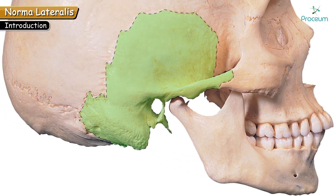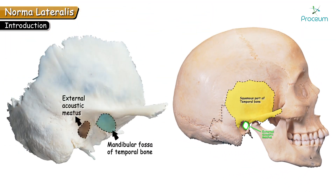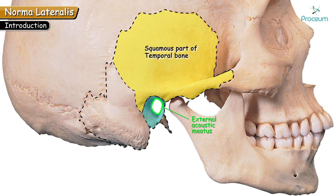Let's see the parts of the temporal bone. We can see the squamous part in this view, which is also known as the external auditory bone. Just below the squamous, the opening present is known as the external acoustic meatus, also known as the external auditory meatus. This opening is the opening of the external ear, present behind the mandibular fossa. The next small part of the temporal bone is the tympanic part, which surrounds the external acoustic meatus. It is a curved plate-like bone.